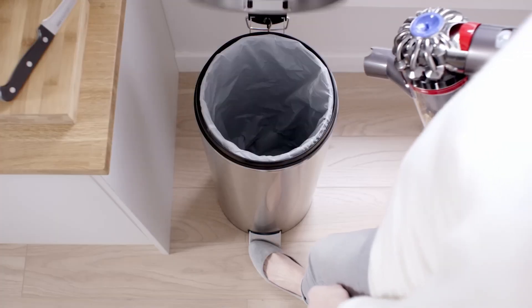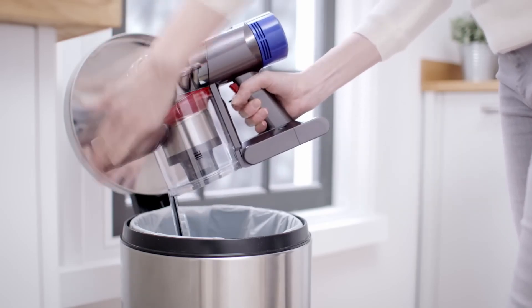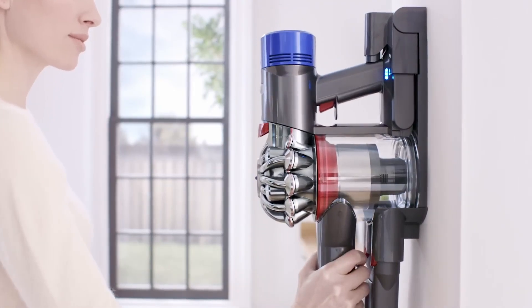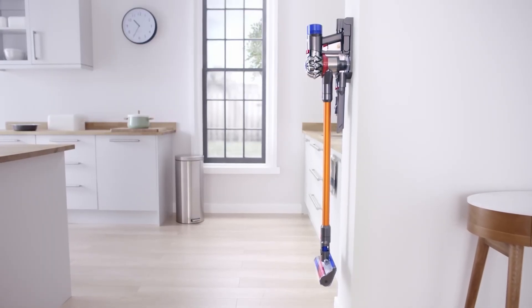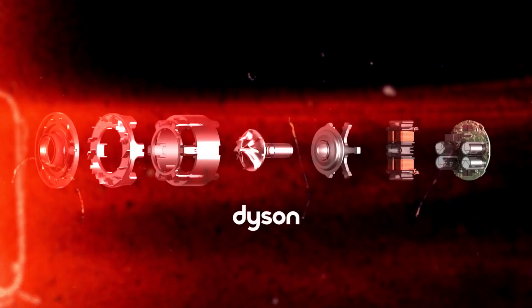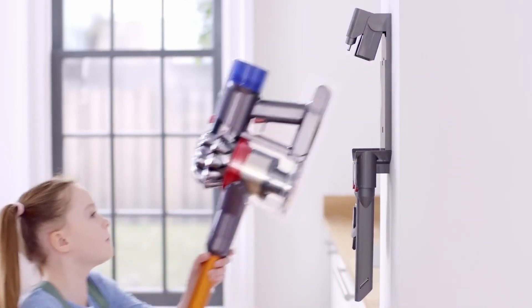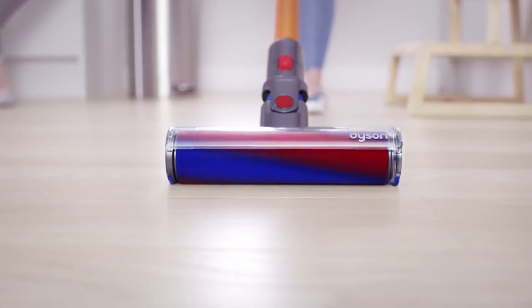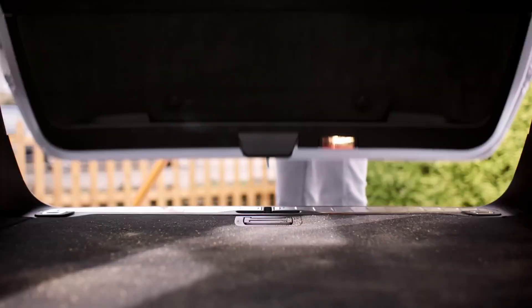It seamlessly transforms from a stick vacuum to a handheld model, making it easy to clean hard-to-reach areas or to use on upholstery and car interiors. Equipped with a variety of attachments, including a motorized cleaner head for deep-cleaning carpets, a soft roller cleaner head designed for hard floors, and specialized tools for reaching corners and tight spaces, the V8 can tackle any cleaning task with ease. Users can also benefit from the hygienic dirt ejector, which allows for easy and mess-free emptying of the dustbin with just a single button press.